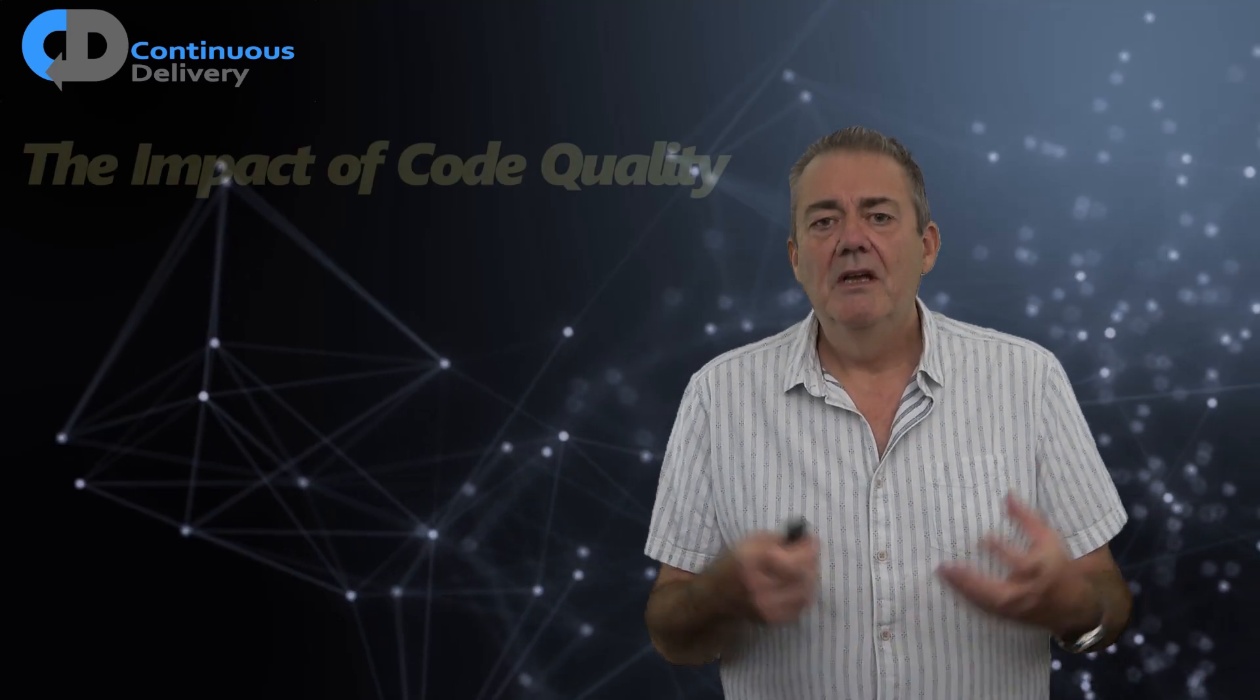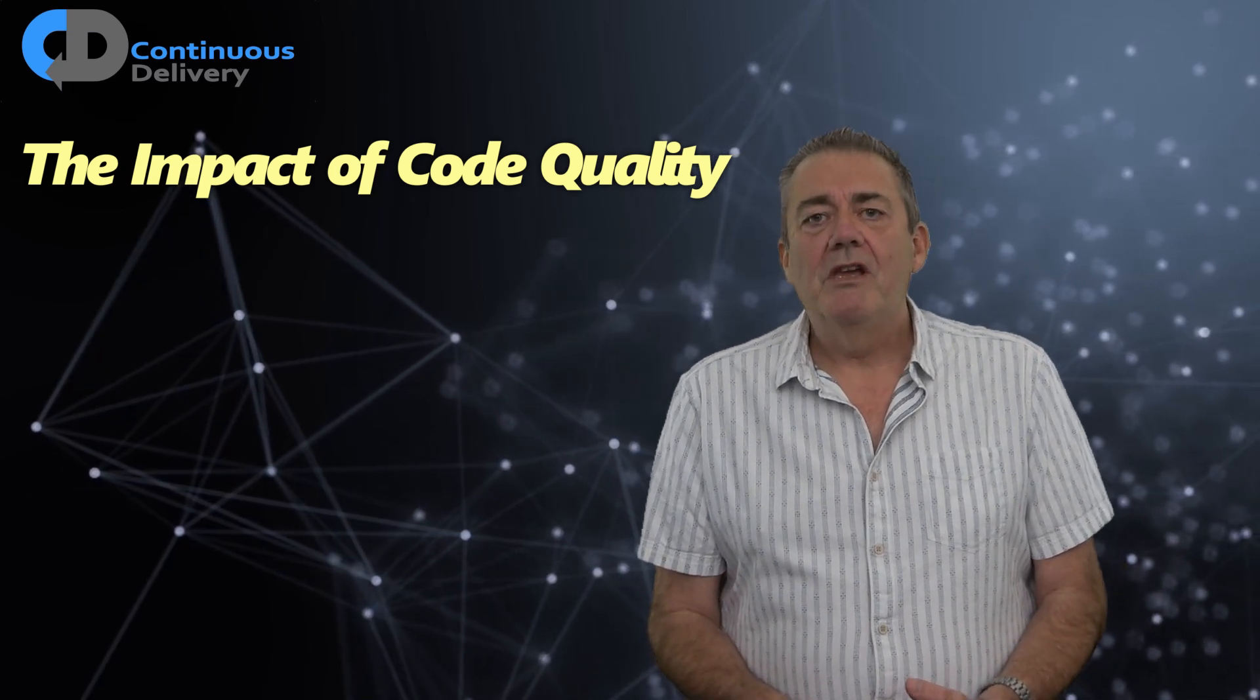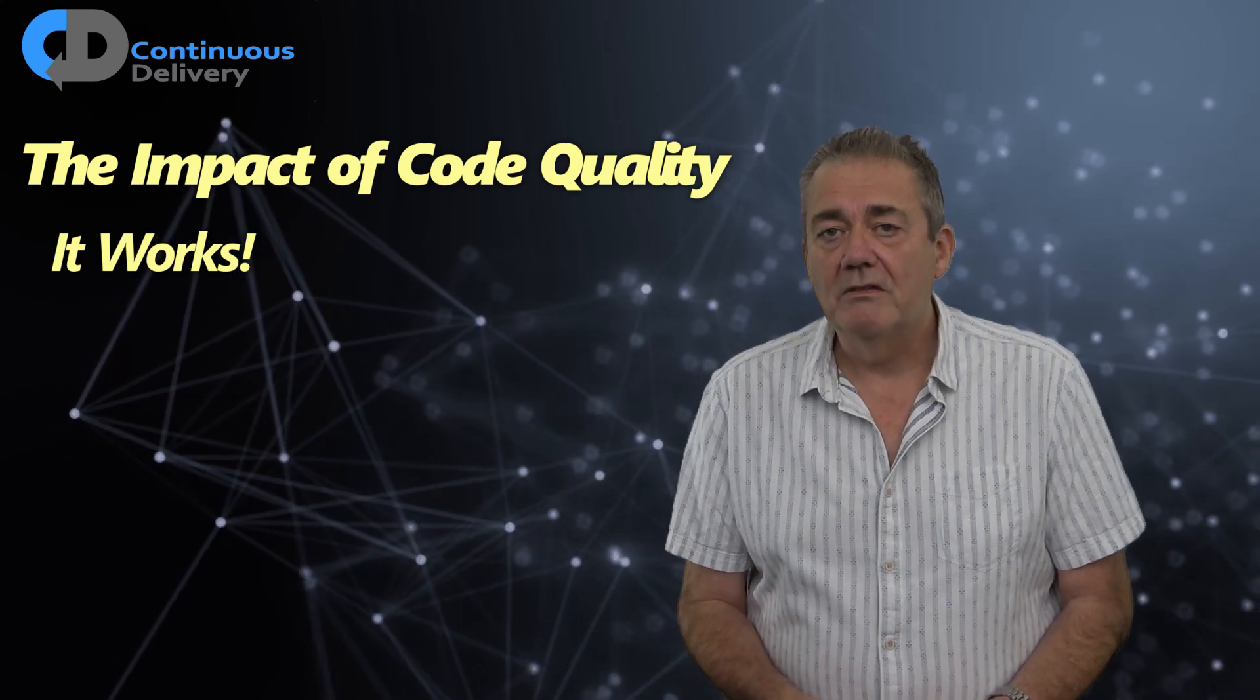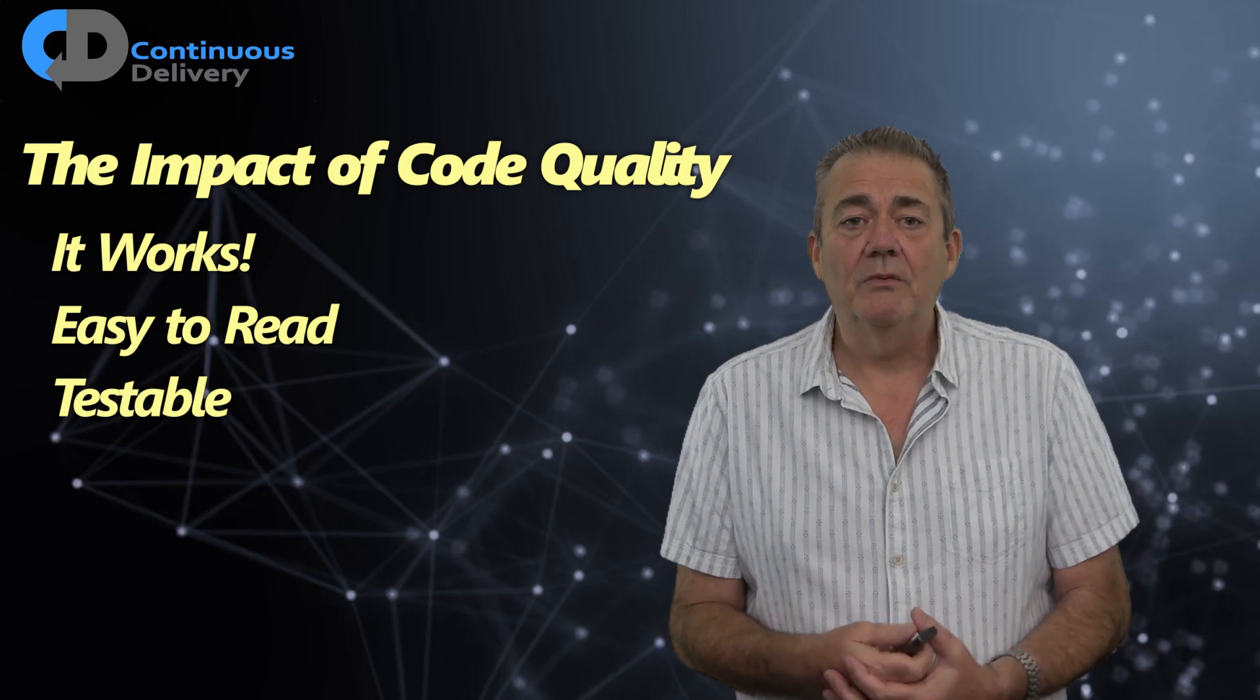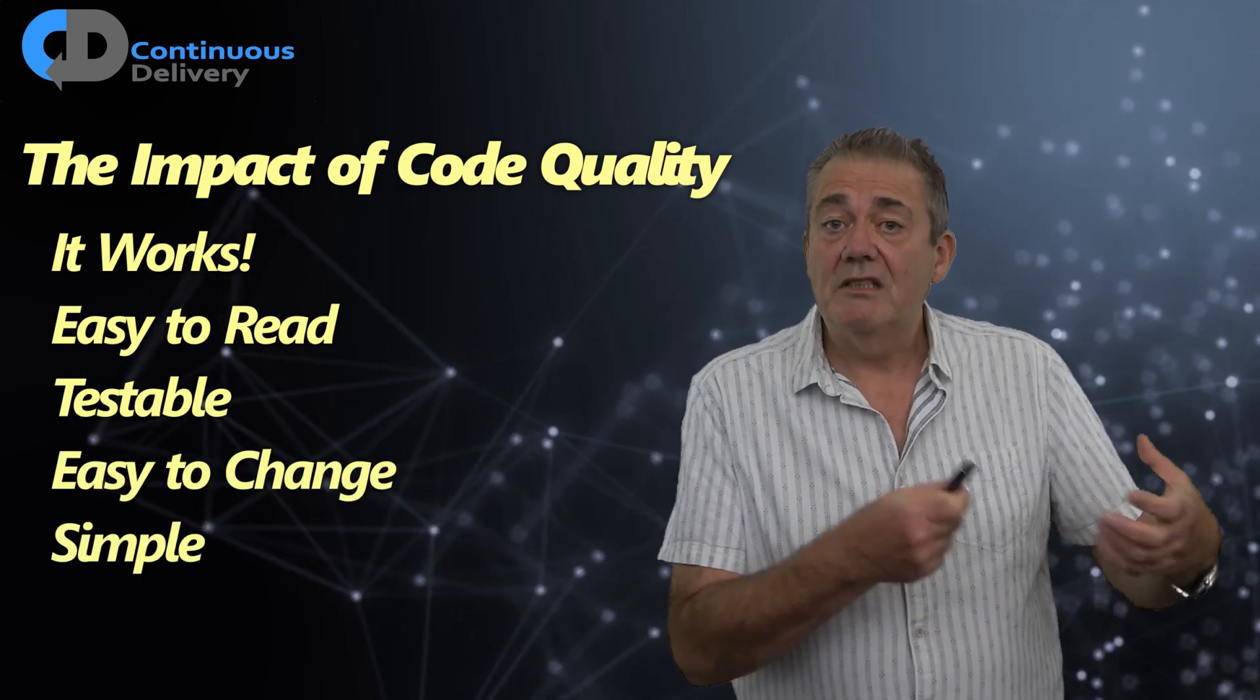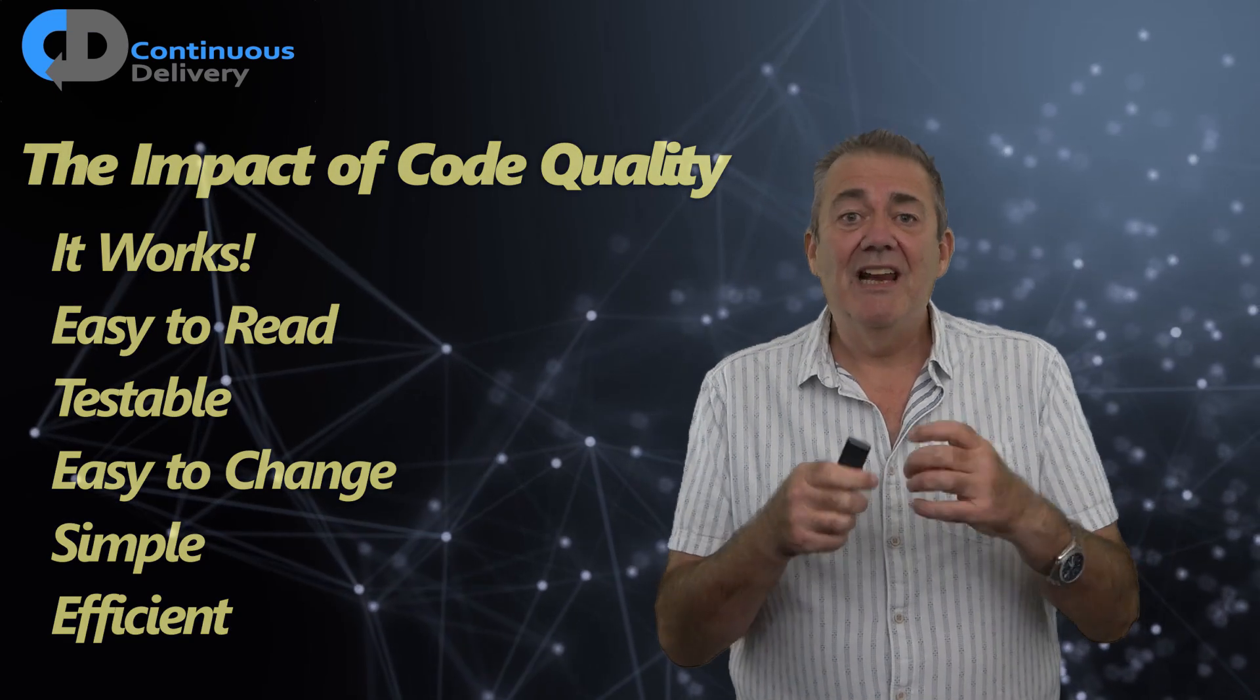Let's think about design and why we care about it for a moment. What would we consider to be quality in code? I think the first and obvious thing that we would be looking for is that it works. It does something that is helpful in some way. As programmers that need to work in the code, we'd also like it to be easy to read. Testable so that we can check that it does indeed work. Easy to maintain, easy to change in the future. Simple, as simple and efficient as possible. We'd like all of those things.